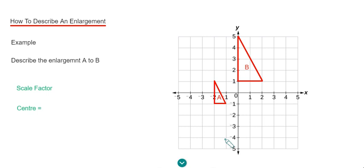To do this we need to work out the scale factor of the enlargement. That's how many times bigger the sides on shape B are than shape A, and the centre of enlargement which is the point where we've enlarged the shape from.